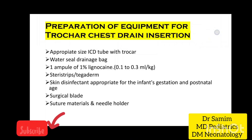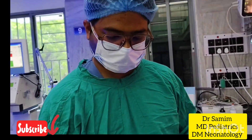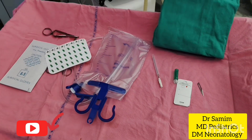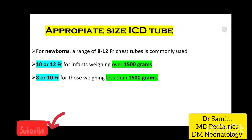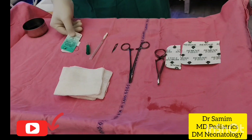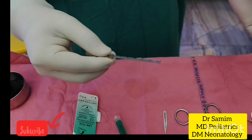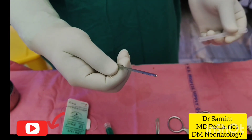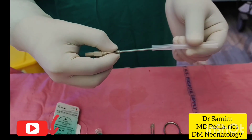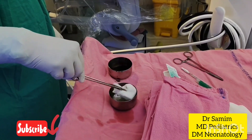Here is a list of equipment which is needed for ICD insertion. For newborns, an 8, 10, or 12 French ICD tube is usually used. A 10 or 12 French ICD is used for infants weighing over 1,500 grams, and an 8 or 10 French ICD is used for those weighing less than 1,500 grams.